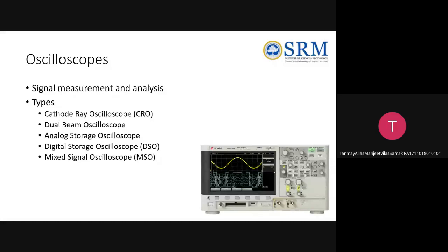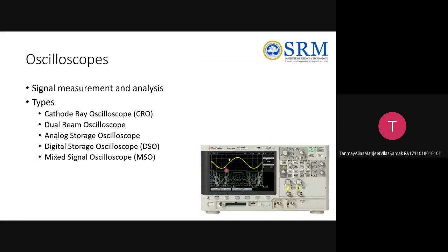Lastly, mixed signal oscilloscopes — on the bottom right you can see an image of a mixed signal oscilloscope by Keysight. The key difference between a DSO and an MSO is that in both you can view analog and digital signals, but in an MSO you have the functionality to temporally correlate those signals. You can see an analog waveform alongside eight digital waveforms, and their time steps match with respect to each signal. In DSOs, you cannot achieve this temporal correlation.